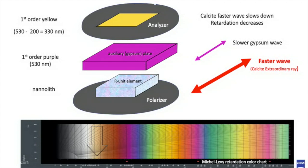The retardation of the gypsum plate, 530 nm, minus the original retardation of the calcite crystal, 200 nm, which is equal to 330 nm. This retardation corresponds to a first order yellow on the Michel Levy chart.